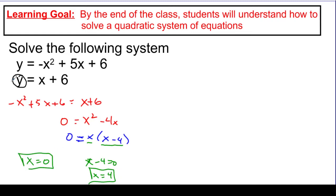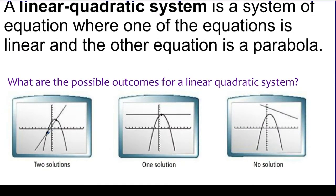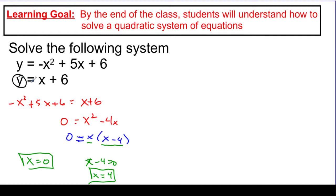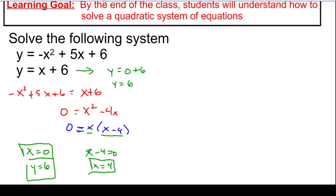When we talk about solutions to systems, we're actually talking about points — an x and a y together. So each x value has its own y value, and I have to plug both values back in. When I plug x equals 0 into the second equation, y equals 0 plus 6, so y equals 6. That gives the point (0, 6). When I plug in x equals 4, y equals 4 plus 6, so y equals 10. That gives the point (4, 10). So I get two solutions: the points (0, 6) and (4, 10).